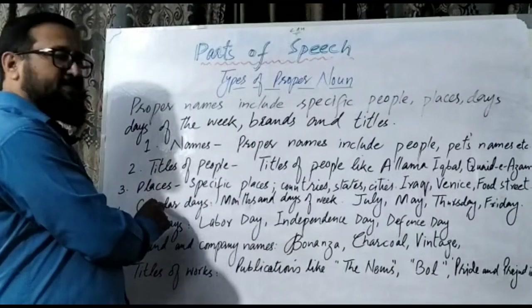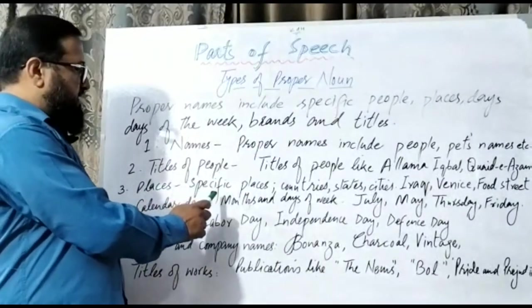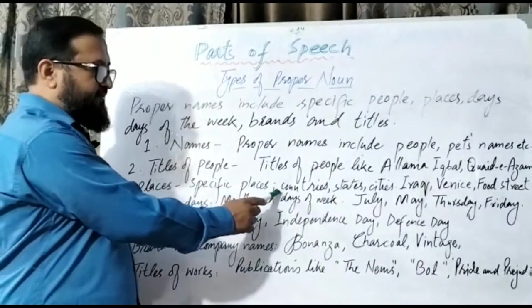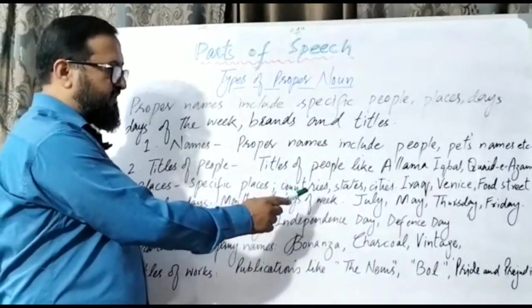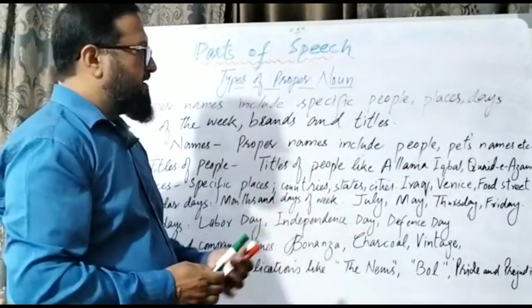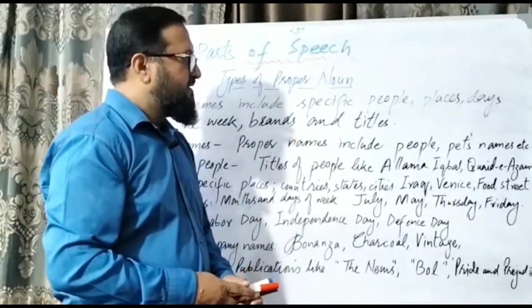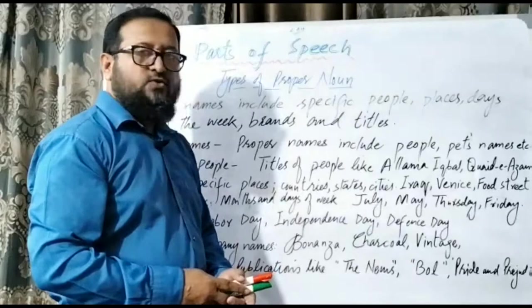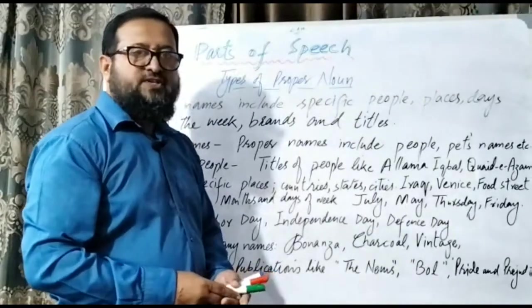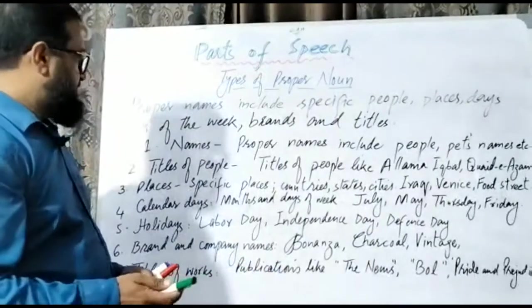Number three is places — specific places, countries, states, cities: Iraq, Venus, Food Street, or any particular place names.